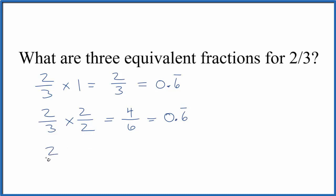Let's do another one. Two-thirds times, you guessed it, three over three. Two times three is six. Three times three is nine. And if we divide this six by nine, we get 0.6. This is another equivalent fraction for two-thirds.